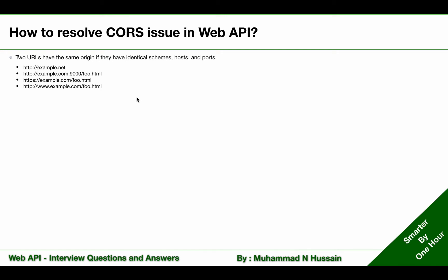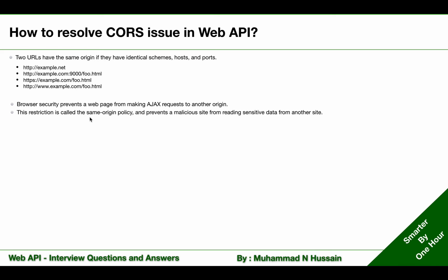Remember, browser security prevents a web page from making Ajax requests to a different origin. This restriction is called the same-origin policy, and it prevents a malicious site from reading sensitive data from another site.